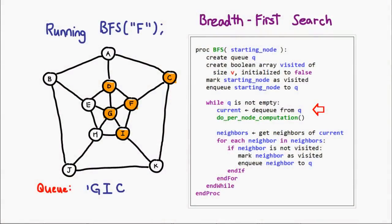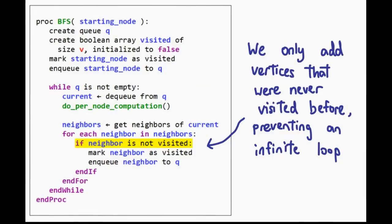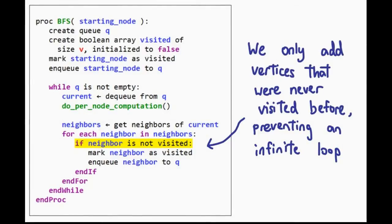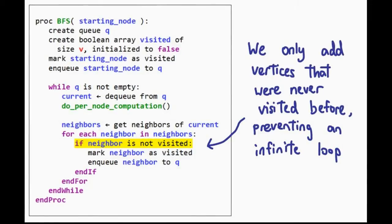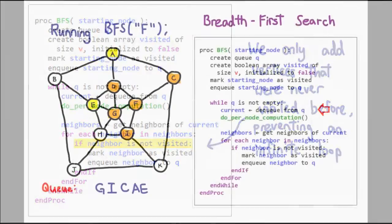So we dequeue our second node, and we try to add its neighbors again. Notice how we actually avoid an infinite loop by not adding the first vertex. As long as a vertex has already been visited, we don't want to add that to the queue again, otherwise this whole search will never end. So yeah, rinse and repeat. As long as we keep doing this, we will search further and further away from our first node, and eventually, we will hit every single node in a graph.